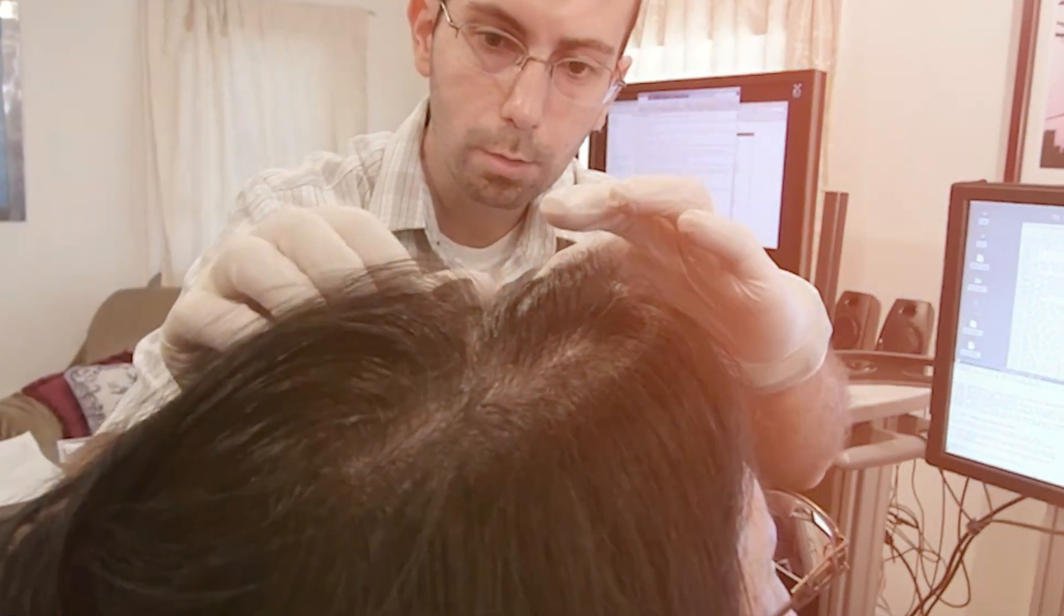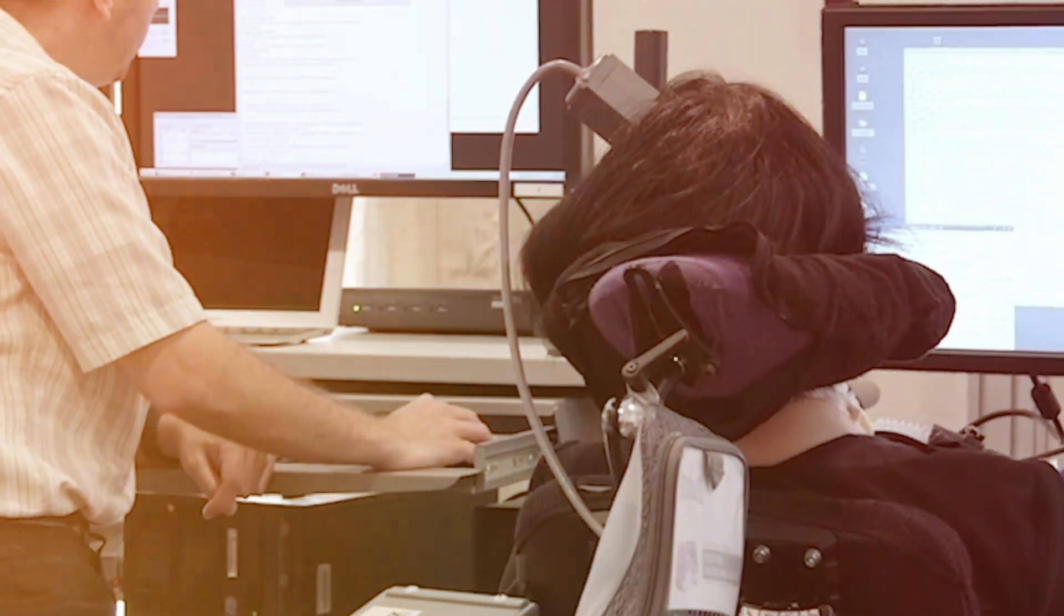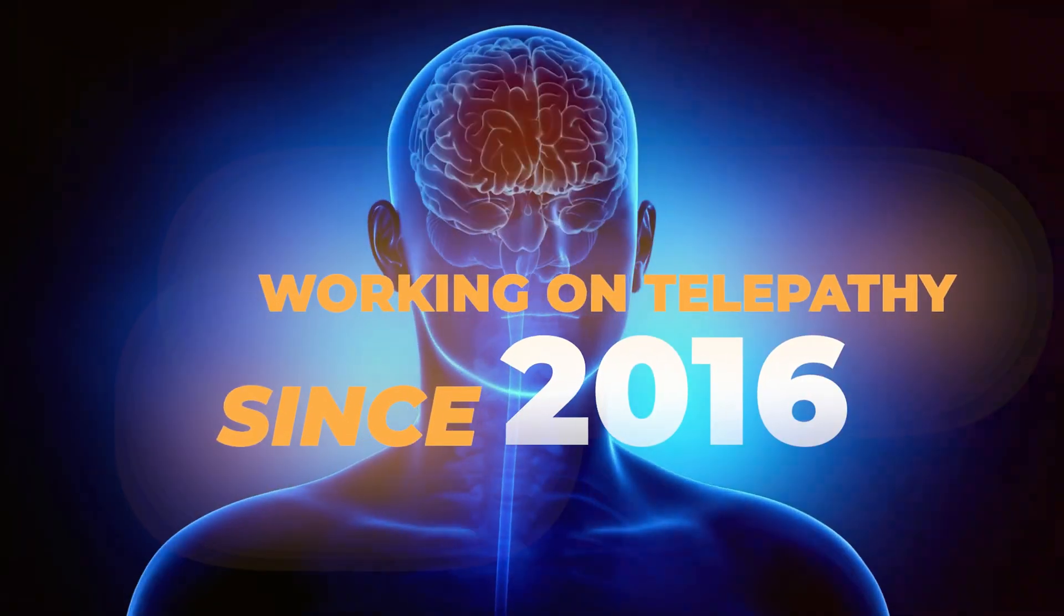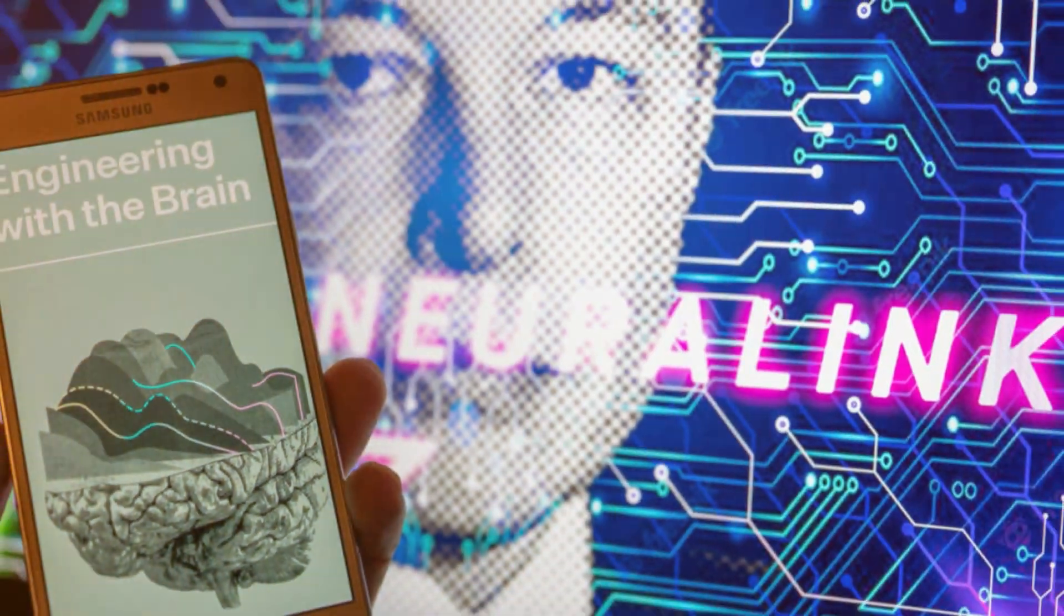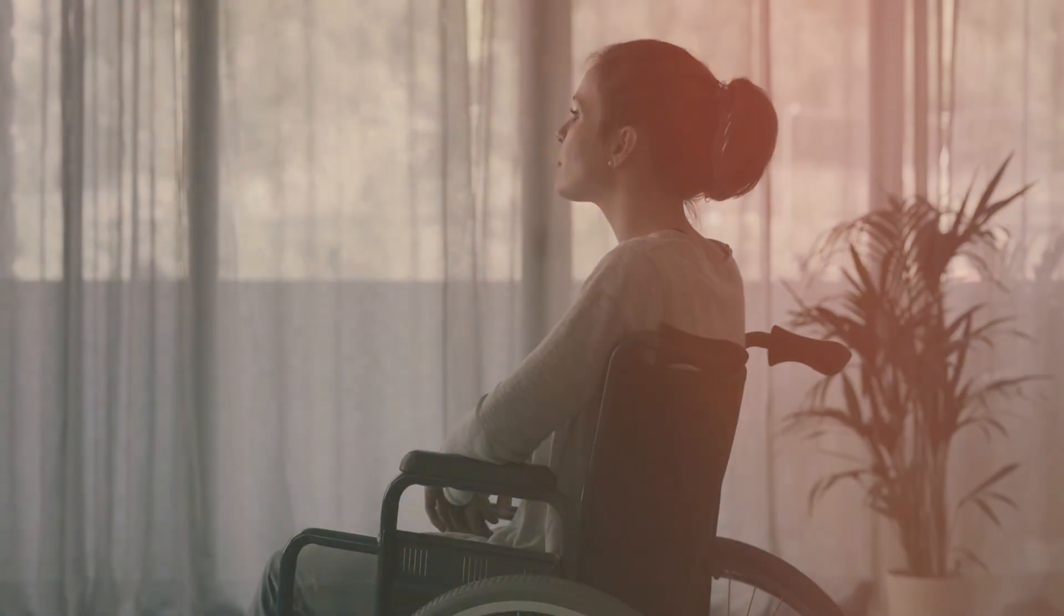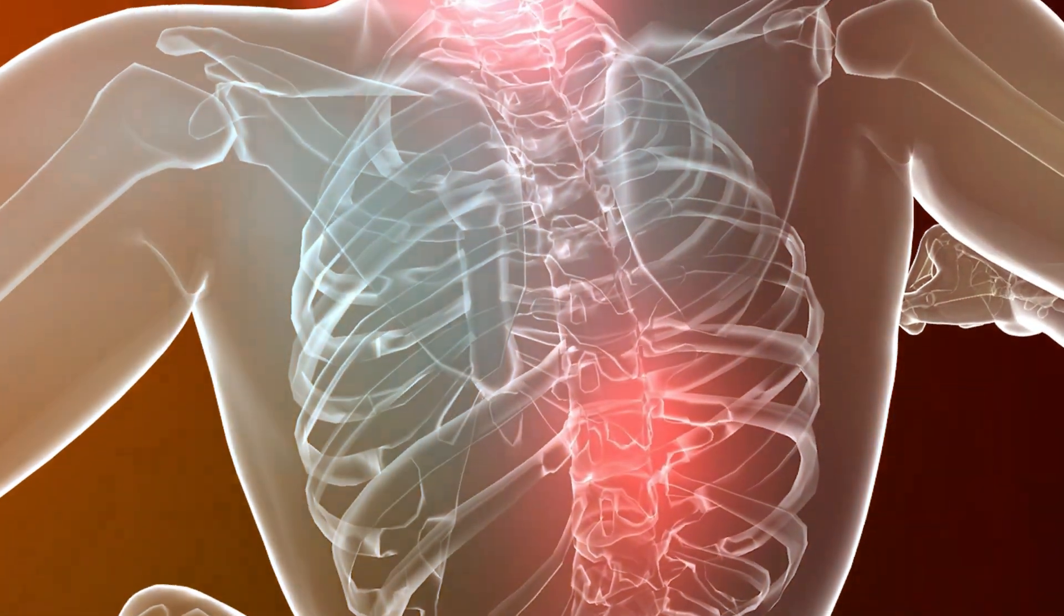While other companies are developing brain-computer interfaces, Neuralink is one of the most innovative and ambitious. It has been working on telepathy since 2016 and has made significant progress and breakthroughs in the past few years. The company is also transparent and open about its research and development, sharing its results and challenges with the public and the scientific community.